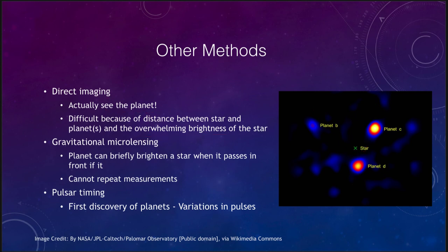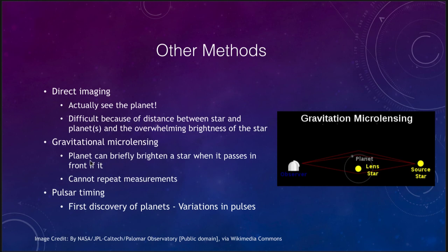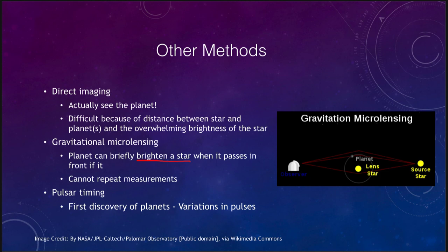Gravitational microlensing is another method. A planet can briefly make a star appear brighter when it passes in front of it — the planet causes additional lensing of the background star's light. This is a nice way to detect planets that are further from their star, because it does not depend on being close. The radial velocity method and transit method are easier to apply for planets closer to their star because events occur more often. Microlensing can detect planets even in very wide orbits — a planet like Jupiter, Saturn, Uranus, or Neptune could be detected this way. However, we cannot repeat the measurements; we have to wait for the planet to pass in front of another distant star, so confirmation is more difficult.